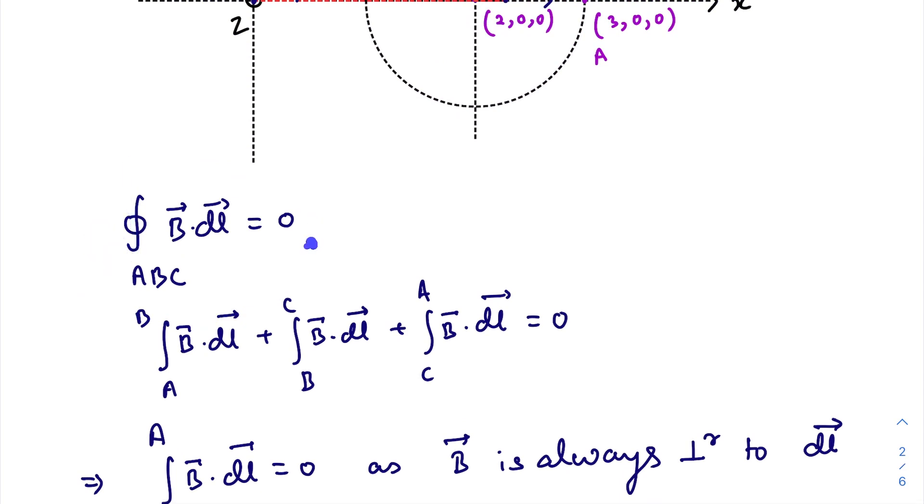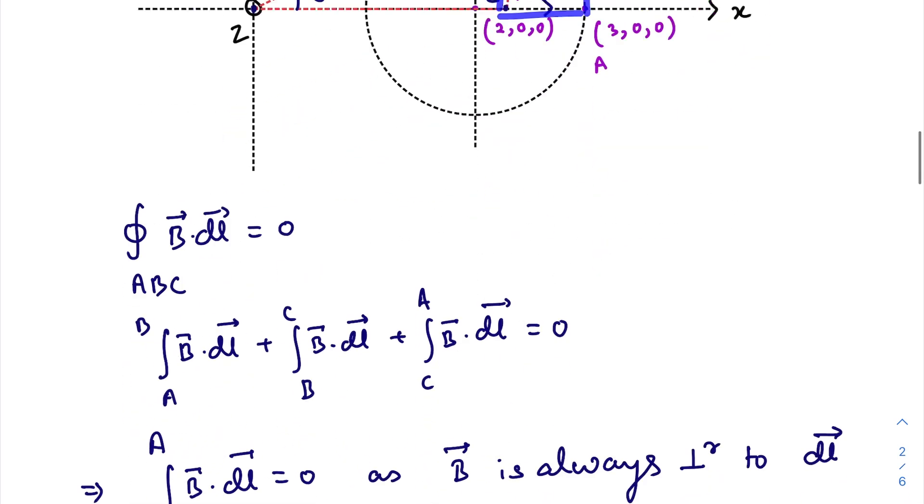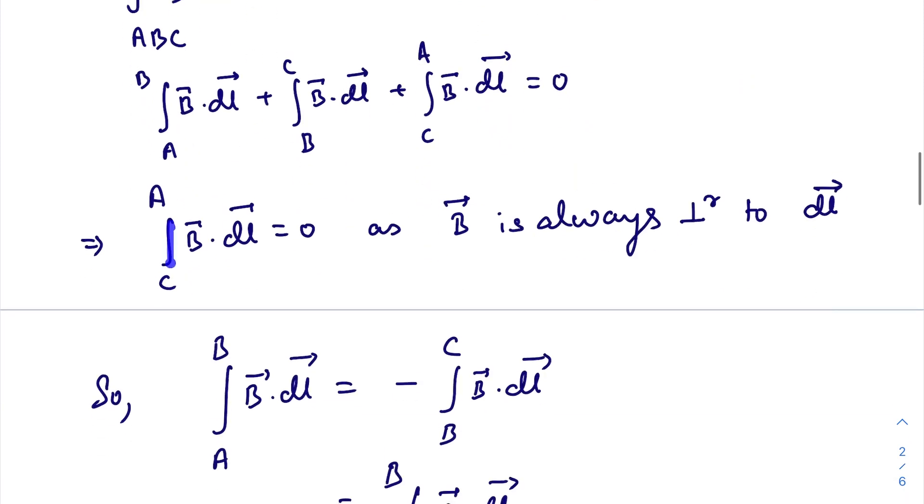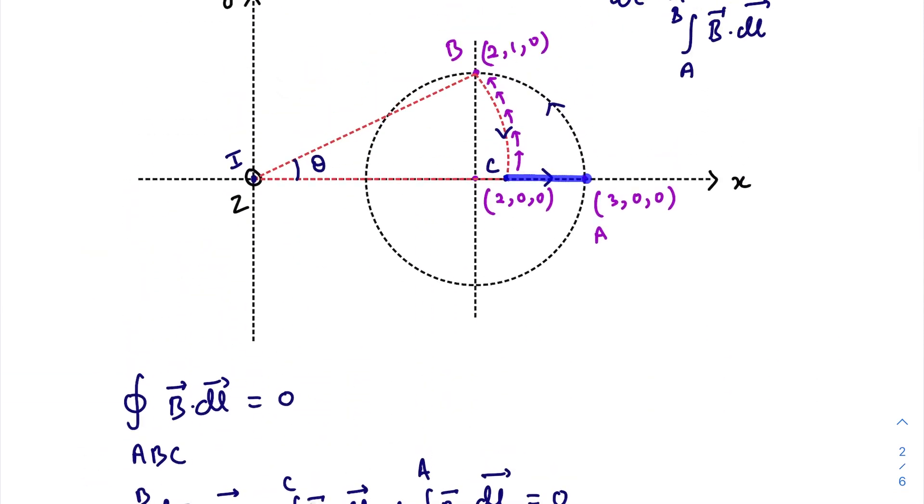If you break this whole loop into three parts - A to B, B to C, and C to A - it should be zero again. The integration from C to A of B dot dl will be zero because for this path the magnetic field is always perpendicular.